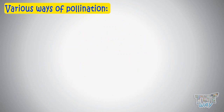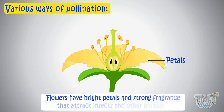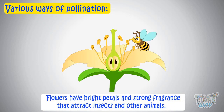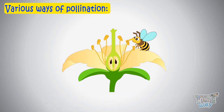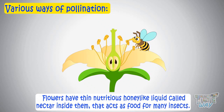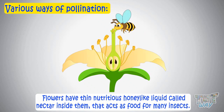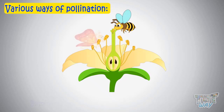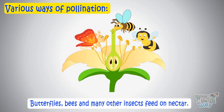There are various ways that pollens reach the stigma. Flowers have bright petals and strong fragrance that attract insects and other animals. Also, flowers have thin, nutritious honey-like liquids called nectar inside them, which acts as food for many insects. Butterflies, bees, and many other insects feed on the nectar, so they visit the flower to suck nectar.